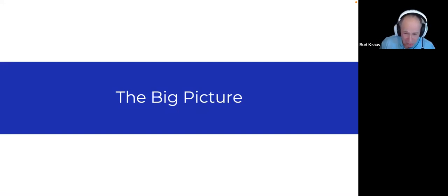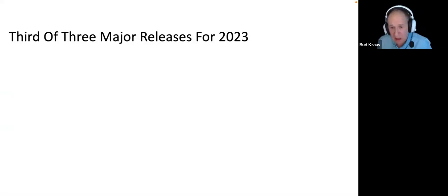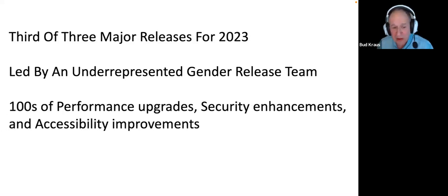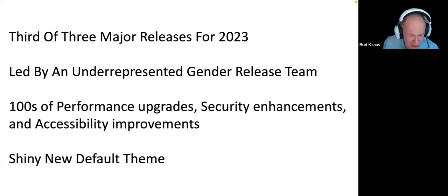As far as the big picture goes with what's new in WordPress 6.4: it's the third of three major releases this year. The one before it came out in August. This release is being led by an underrepresented gender release team — the second time this has happened in WordPress history. There are hundreds of performance upgrades, security enhancements, and accessibility improvements, plus plenty of bug fixes. One thing we will be looking at today is the shiny new default theme, 2024.